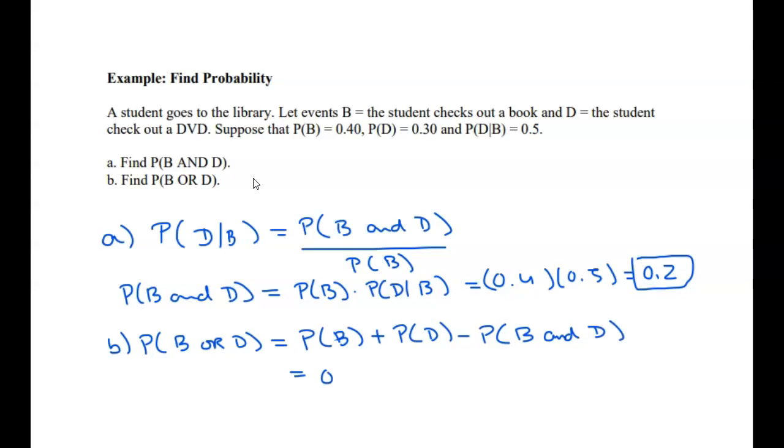P of B is 0.4, P of D is 0.3, minus 0.2. We have 0.7 minus 0.2, which is 0.5.